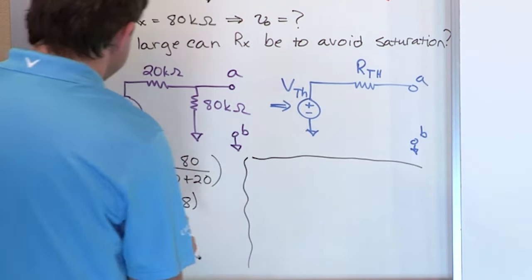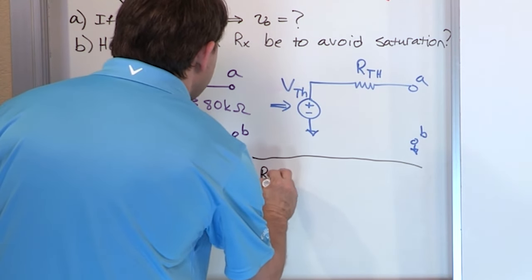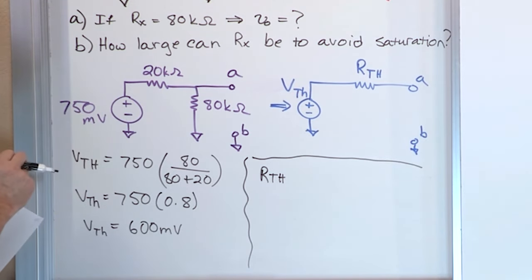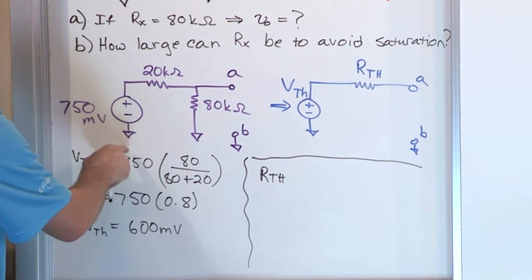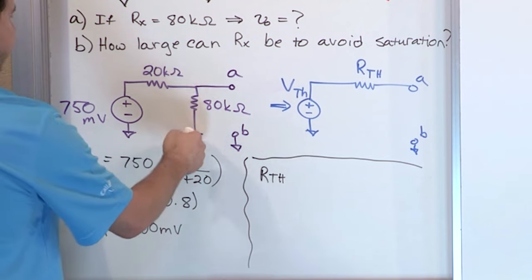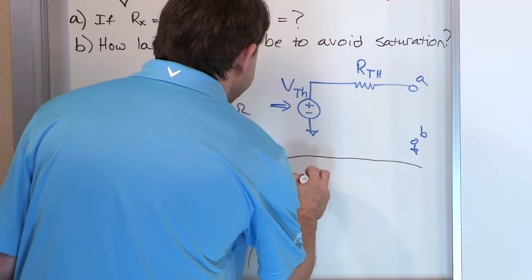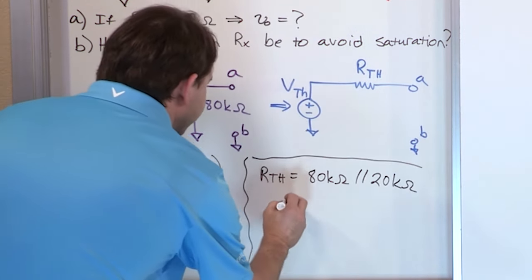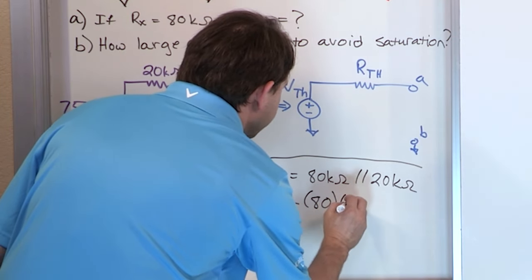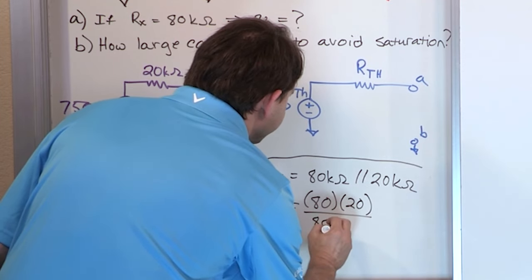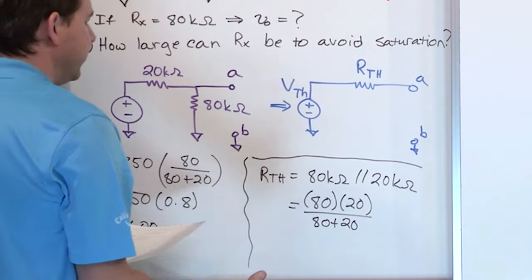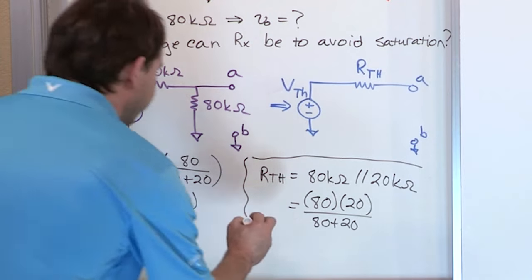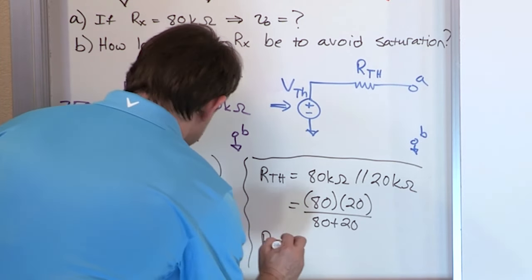Now let's find the Thevenin resistance R_thevenin. For a simple network like this, you look backwards between terminals A and B. Any independent voltage source you see, you replace with a short circuit. So the 80 kilohms is in parallel with the 20 kilohms, and you calculate the parallel resistance: 80 times 20 over 80 plus 20. All the powers of 10 to the third cancel out, giving R_thevenin equals 16 kilohms.